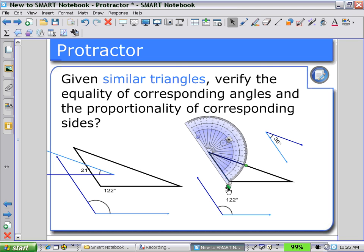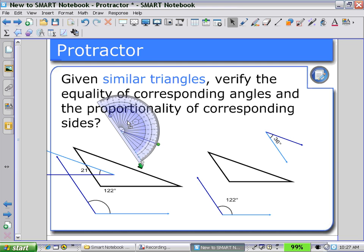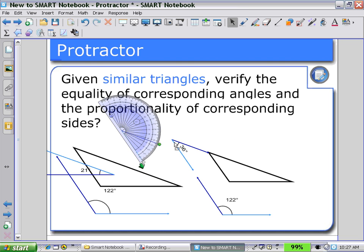We can also look at other properties of the triangle, such as placing the 36 degrees, 122 degrees, and 21 degrees, and looking at the sum of the angles of a triangle, and we have it pretty close to 180 degrees.